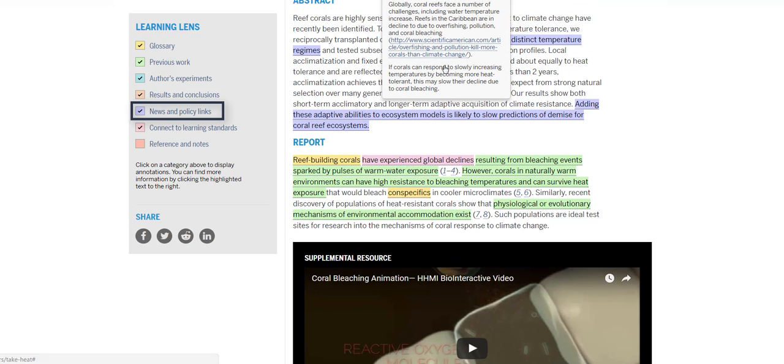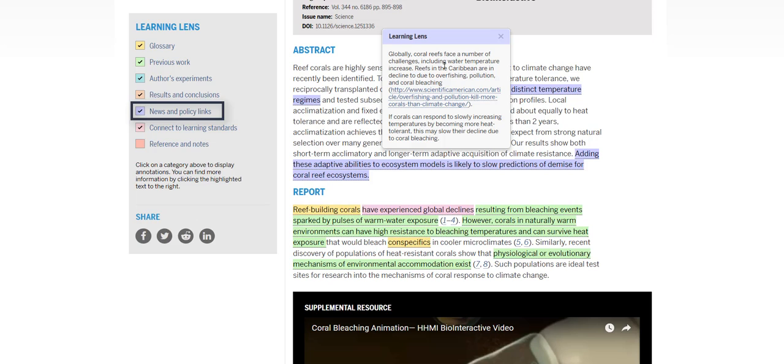News and policy annotations link out to news stories related to or based on the research in the article. They can also include information about policies that either informed or resulted from the research, including ethical considerations.